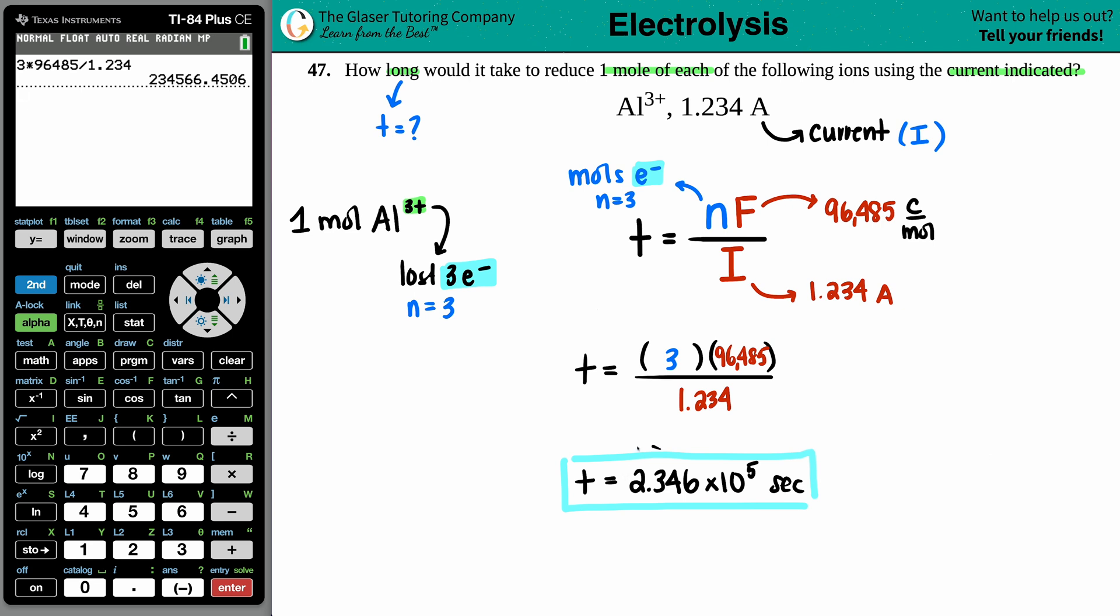And this is how long it would take. A lot of seconds. So if I just quickly just take that answer and divide it by 60, that's how many minutes. 3,909 minutes. And then if I just divide by 60 again, it takes about 65 hours. And there you go.